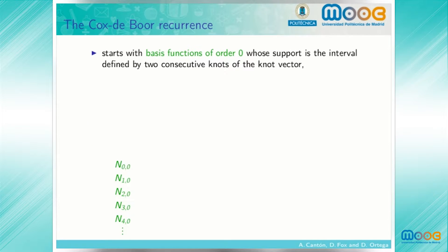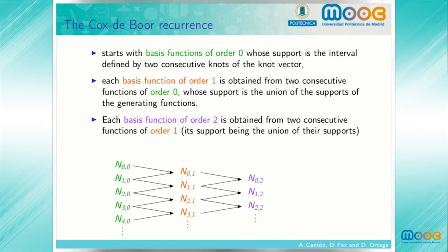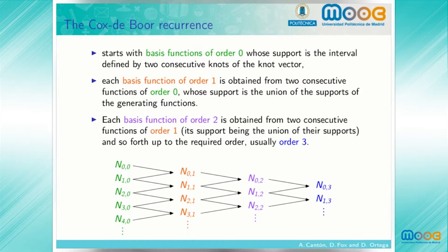The Cox-de Boor recurrence starts with basis functions of order 0, whose support is the interval defined by two consecutive knots of the knot vector. Each basis function of order 1 is obtained from two consecutive functions of order 0, and its support is the union of the supports of the generating functions. Each basis function of order 2 is obtained from two consecutive functions of order 1, its support being the union of their supports, and so forth up to the required order, usually order 3. This recursion is depicted schematically in the diagram below.